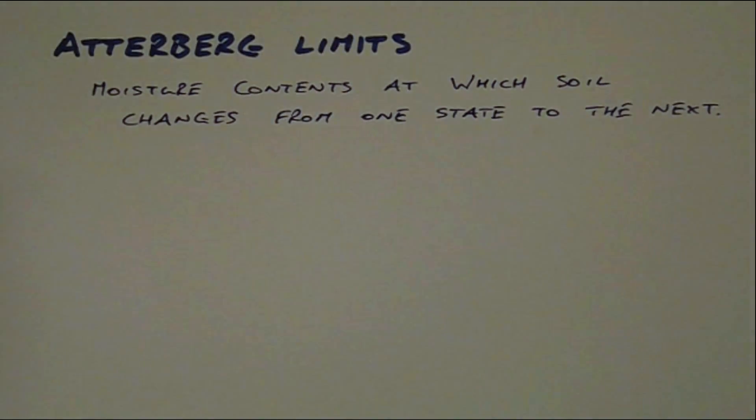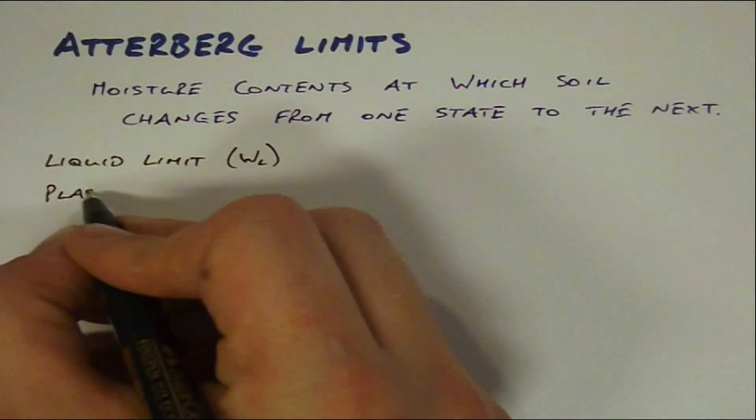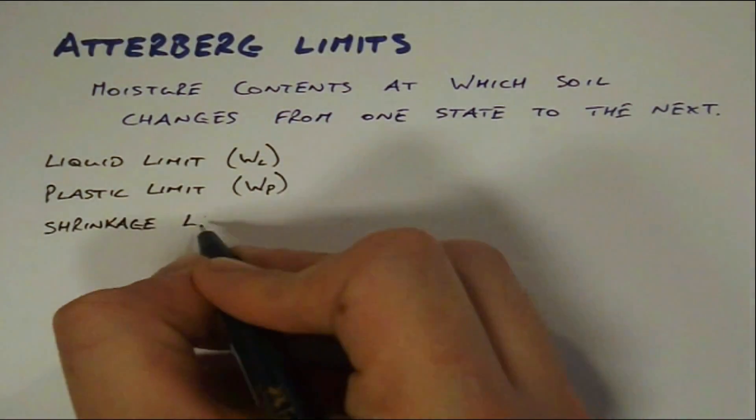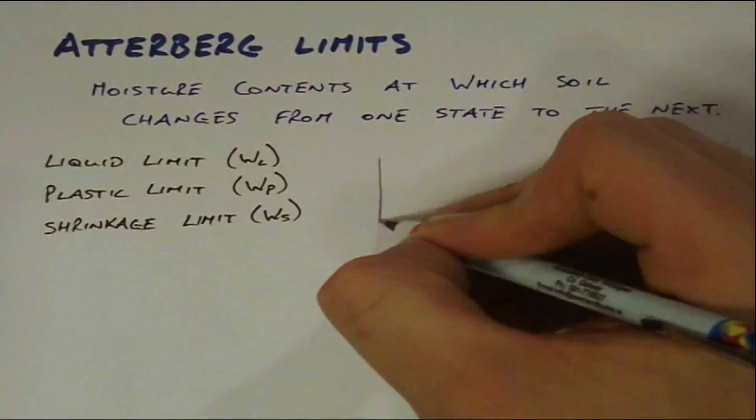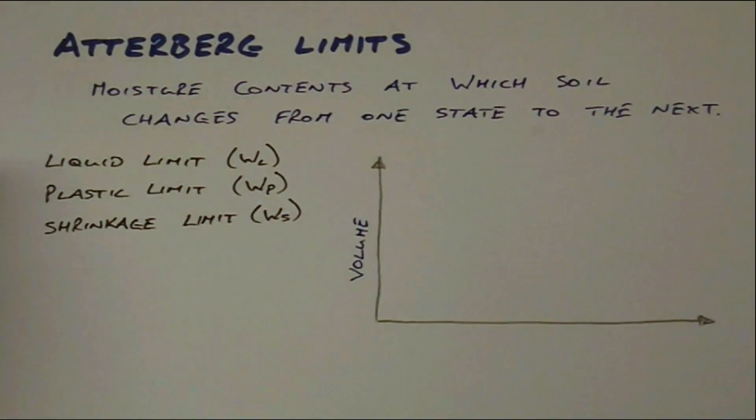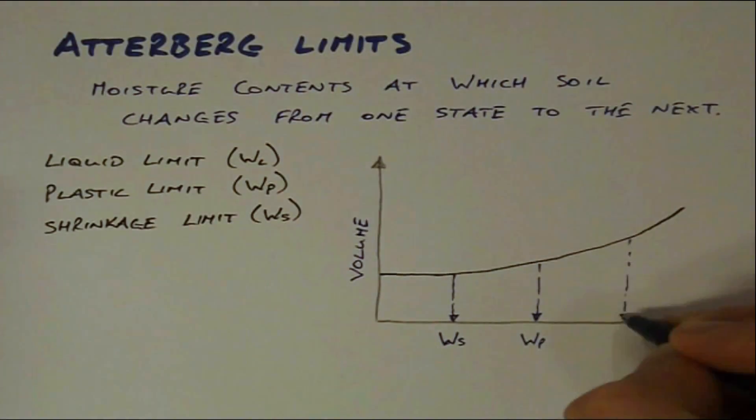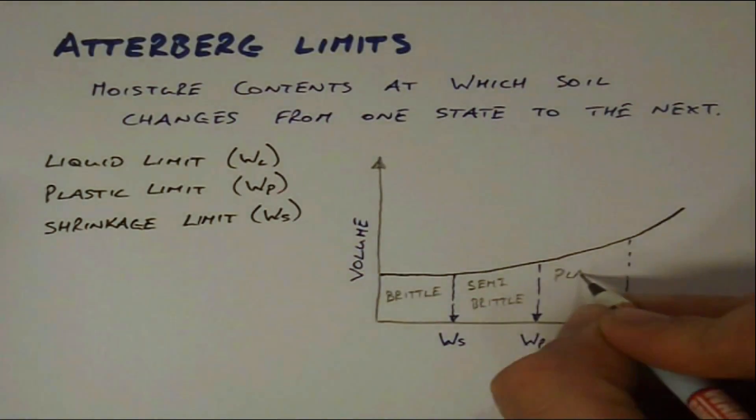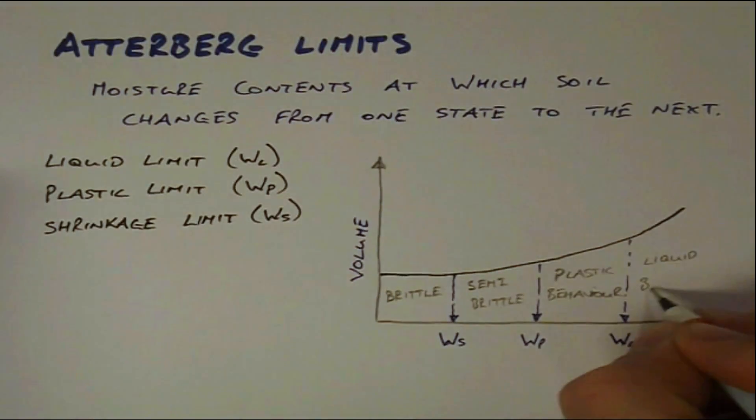There are three Atterberg limits: the liquid limit WL, the plastic limit WP and the shrinkage limit WS. These moisture contents define when a soil transitions from being a liquid to a plastic and finally a brittle material as it dries.